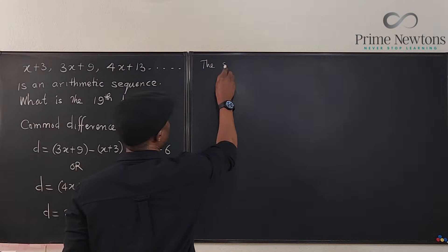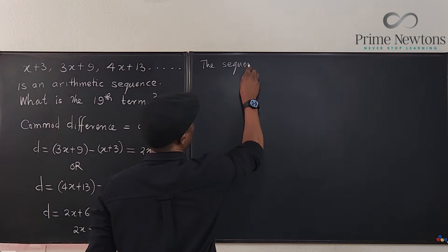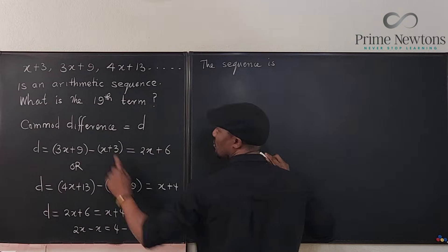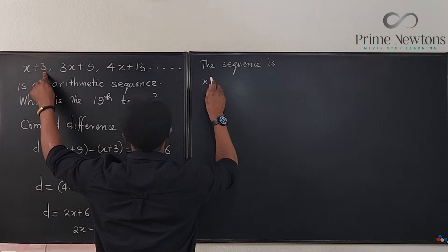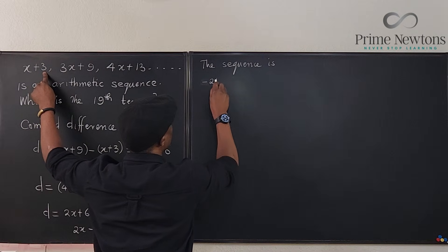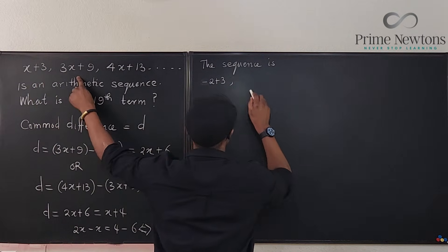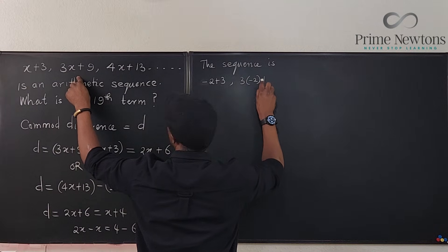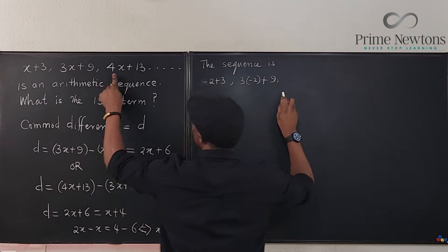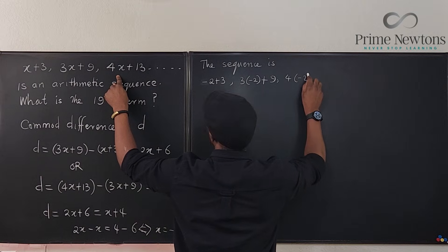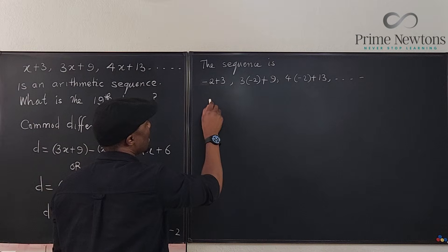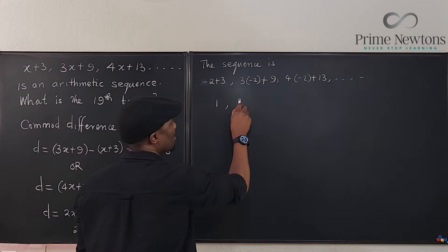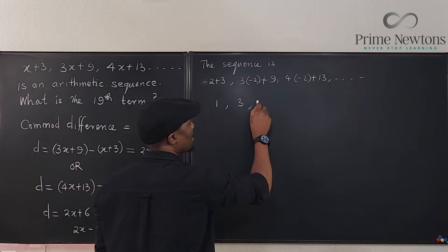Therefore the sequence is, if you plug in negative 2 for x, it's going to be minus 2 plus 3 for the first term. This one is going to be 3 times negative 2 plus 9. And the third term is going to be 4 times negative 2 plus 13. And then other terms come in. So we have 1, this is negative 6 plus 9 is 3, and this is going to be negative 8 plus 13, that's 5.